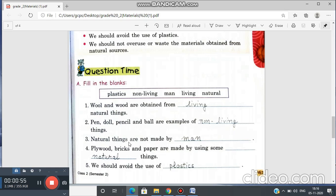Natural things are not made by man. Correct. Now plywood, bricks and paper are made by using some. Which type of things? Natural things.